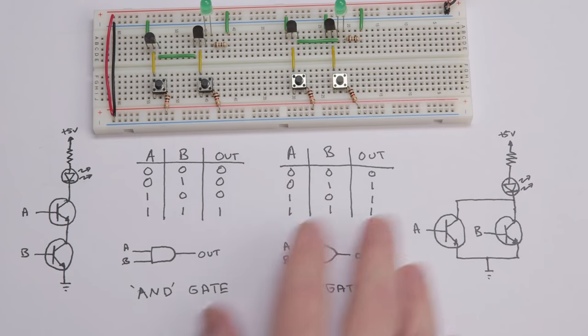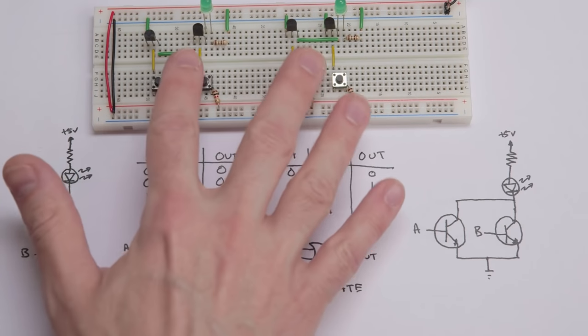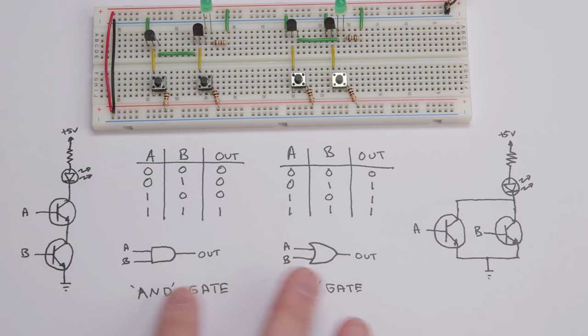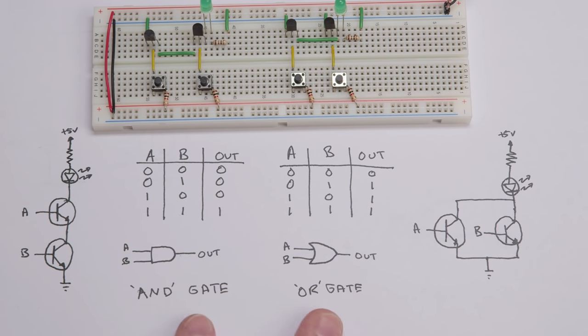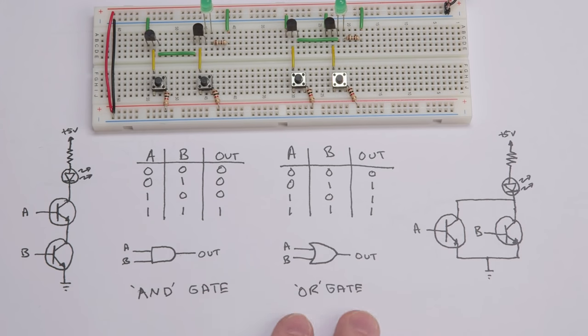So you can see we've got two different circuits — they're very similar but with slightly different operation. One is an AND operation, the other is an OR operation.